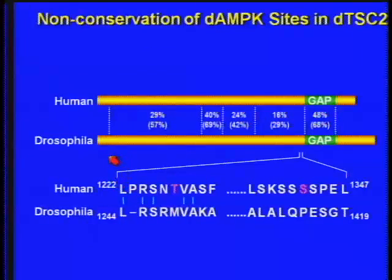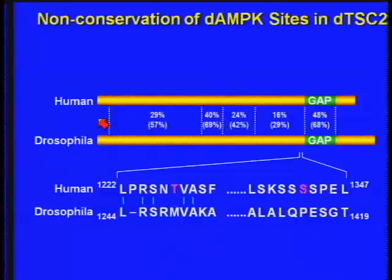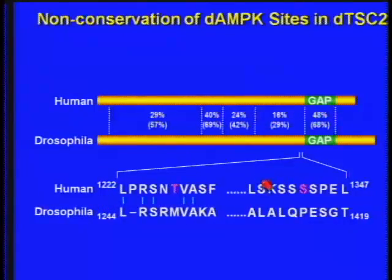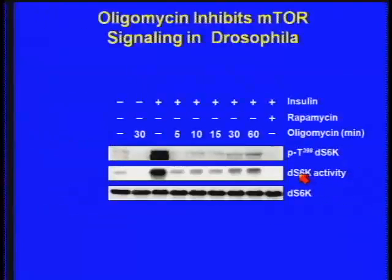What bothered us was that we take advantage of Drosophila genetics because these pathways are highly conserved and there are single molecular components for many enzymes — for example, only one S6K1, no S6K2, only one PKB. When we looked at the AMP kinase phosphorylation sites in human TSC compared to Drosophila, those sites were gone in Drosophila, yet we know this whole pathway is there. So we took Drosophila S2 cells in culture and treated them with oligomycin, an inhibitor of mitochondrial oxidation. As you can see, that very effectively and acutely shuts down this pathway.